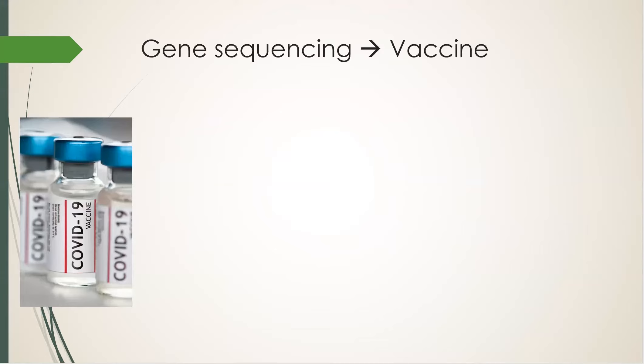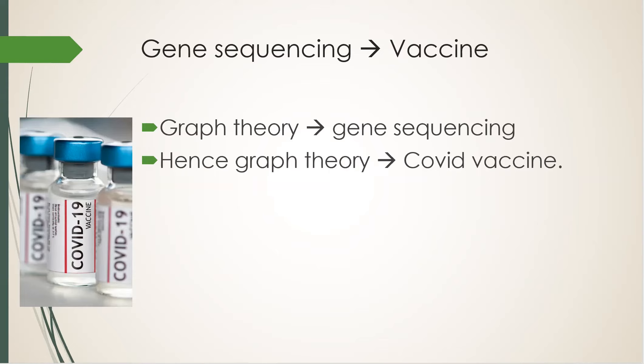Now, all this is only possible because of gene sequencing, and graph theory helps make gene sequencing possible. Hence, graph theory helps make the COVID vaccine.